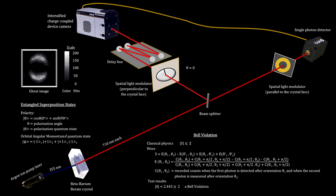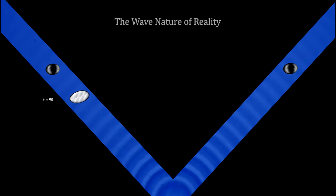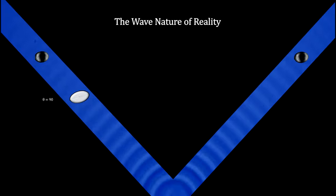The counts show a bell violation, proof that there are no hidden variables involved. Therefore, we see that the entanglement is real, but it is not spooky action at a distance, as Einstein proposed. It is just the wave nature of reality, as Bohr had proposed.